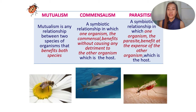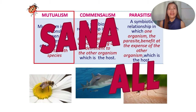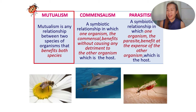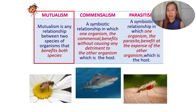Mutualism is a relationship between two species of organisms that benefits both. For example, the bee and the flower — they both benefit from each other. It would be ideal if all relationships were mutually beneficial.